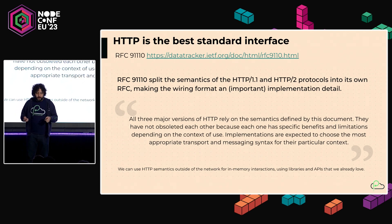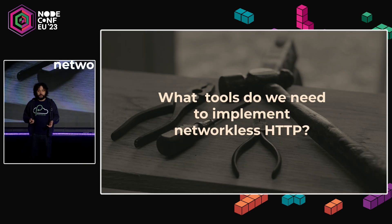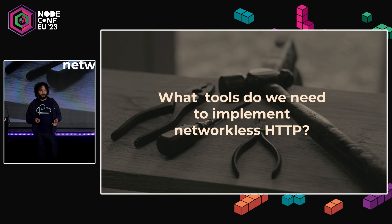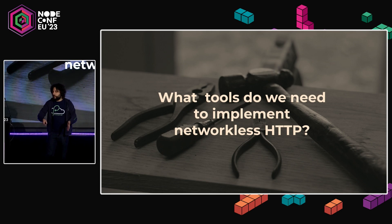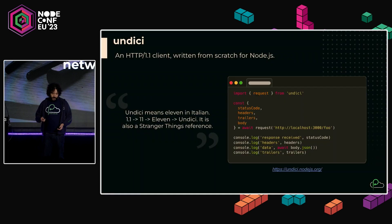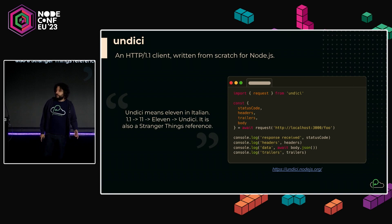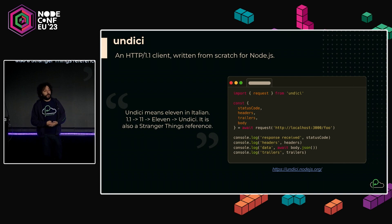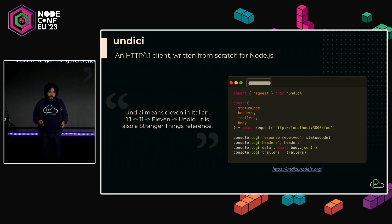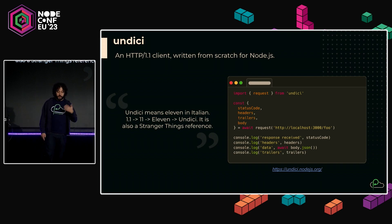How can we implement this? What tools do we need? Is this doable today? First of all, let's start with Undici. I've already done a talk with Undici at this conference years back. If you're using anything else for doing HTTP calls, you're probably doing it wrong — check the readme, the benchmarks. It's probably what you want to use. It started as Undici — which means 11 in Italian — because of HTTP 1.1, and Undici is also a Stranger Things reference.